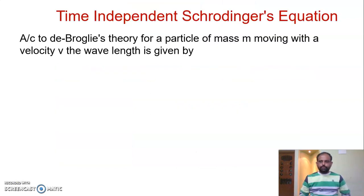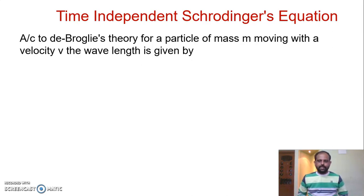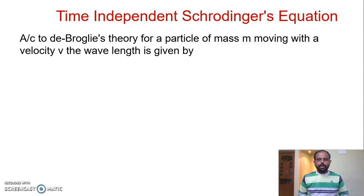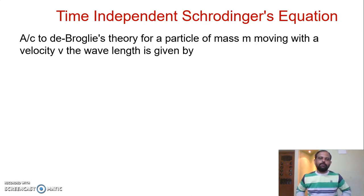For this derivation, we have to consider a particle in any system or in any state. The particle has a mass m and is moving with a velocity v. In the previous semester we discussed de Broglie's theory, which says that any particle under motion exhibits wave-like properties and has a wavelength lambda equal to h divided by p, where h is Planck's constant and p is the momentum of that particle.